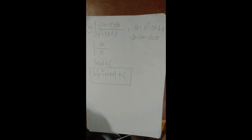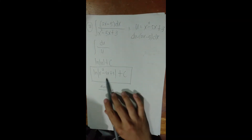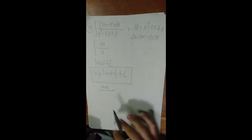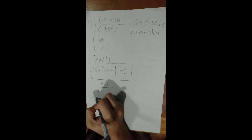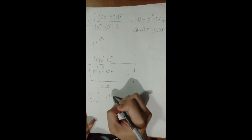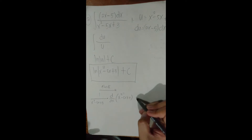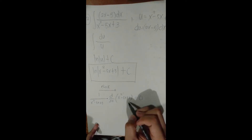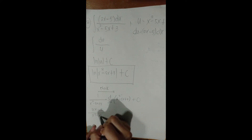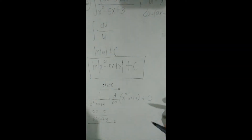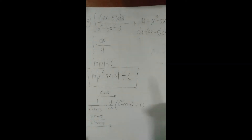Let's verify by differentiating. The derivative of ln(x² − 5x + 3) is 1/(x² − 5x + 3) times the derivative of (x² − 5x + 3), which is (2x − 5). The derivative of the constant 3 is 0. So the result is (2x − 5)/(x² − 5x + 3), which matches our original integrand. The integration is correct.